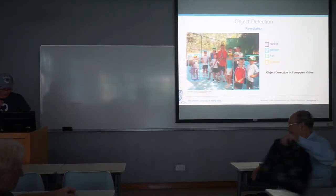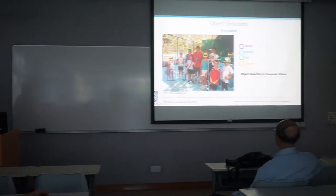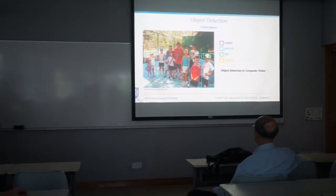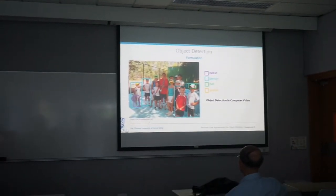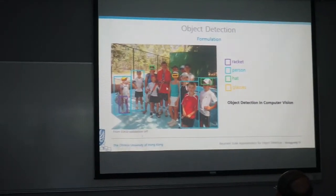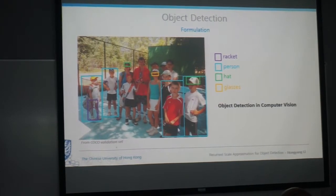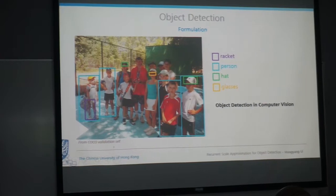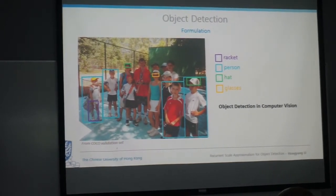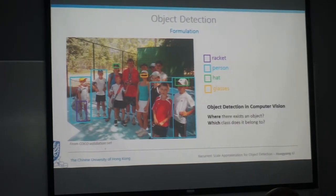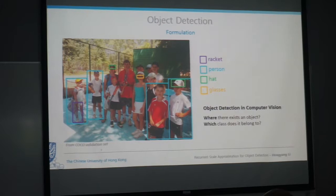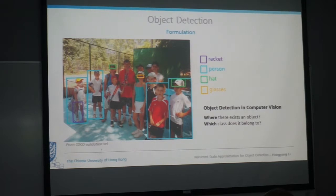Given an image, you will find or detect several objects within it. Say there is a bunch of people playing tennis — you have to find almost all the persons and localize which location they belong to. We localize a bounding box and decide which object class it belongs to. Object detection has two problems: where an object exists, and given the bounding box, which class does it belong to. The task sounds simple, but the problem is very difficult.